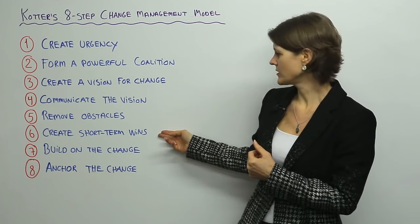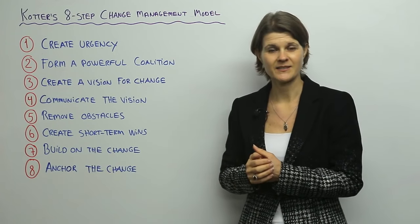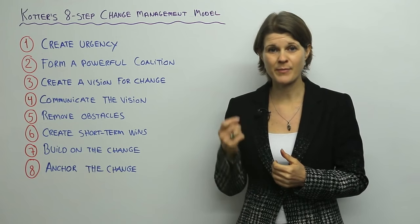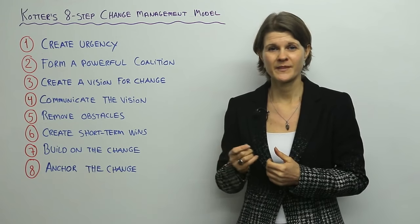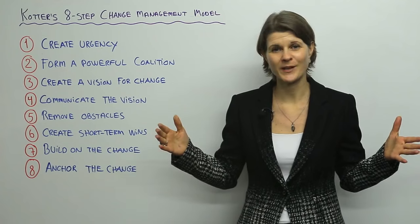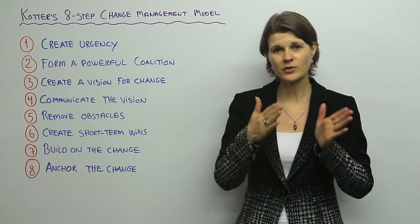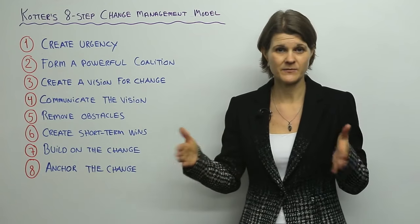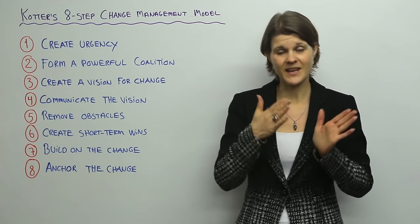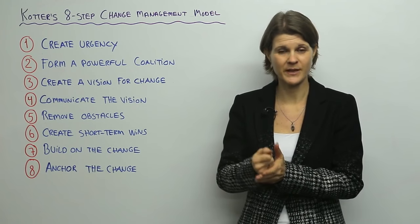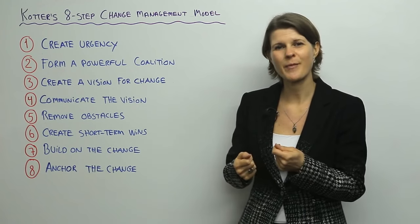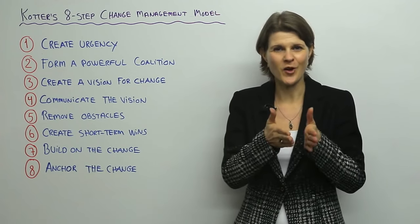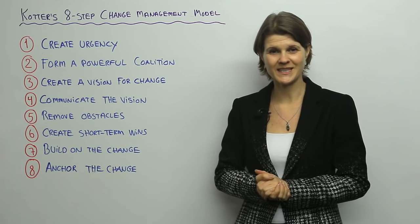The sixth step in Kotter's model is to create short-term wins. There is nothing as powerful when you implement change than demonstrating the benefits early on. Don't take two years to create a program and only deliver benefits then. Break your change project up into sizeable pieces — for instance, different phases — and at the end of each phase, demonstrate tangible benefits. We also talk about it as low-hanging fruit or quick wins. You want to win people over early on by demonstrating what's in it for them.